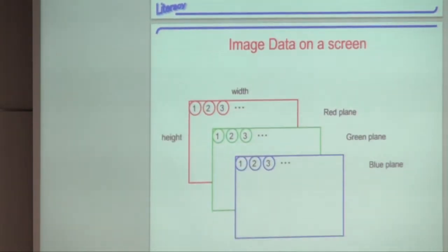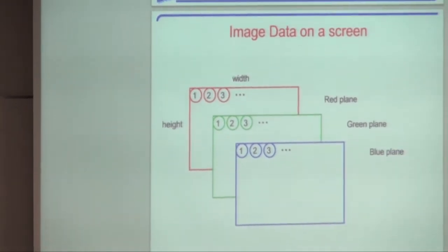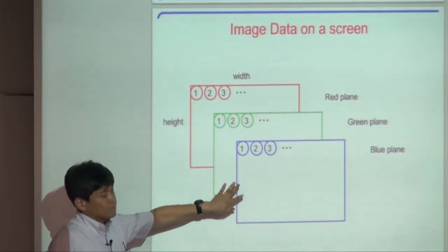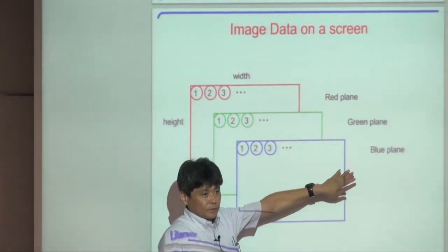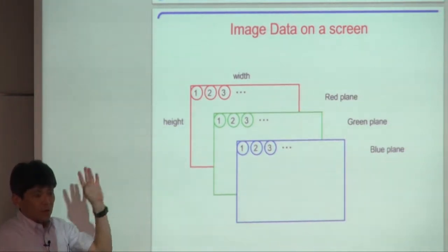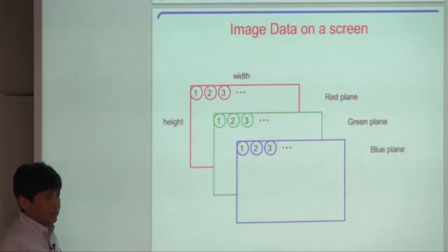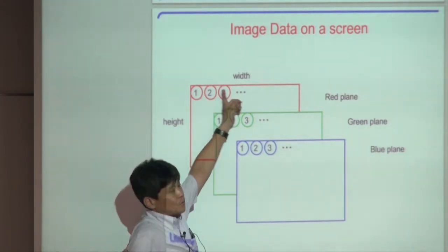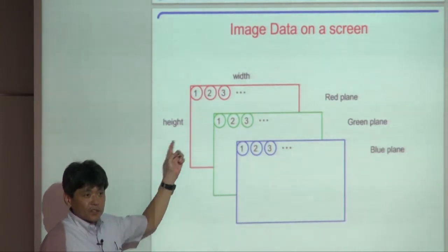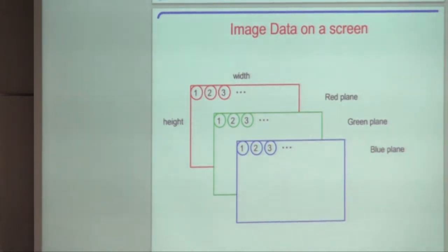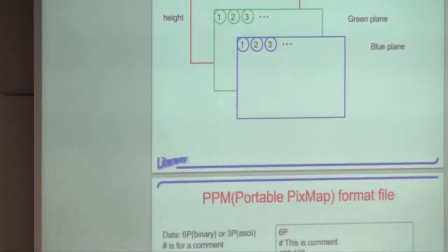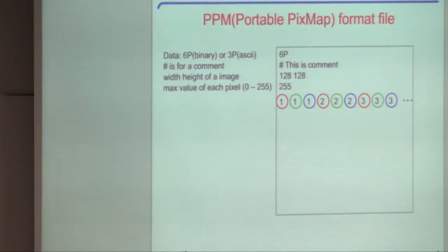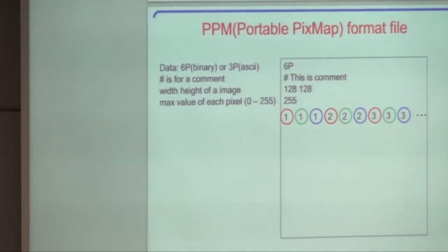As explained, each image consists of three planes: red plane, green plane, and blue plane — especially on your computer screen. The image also has a width and height, which are integer values. To represent the image data, the PPM format is used. PPM is one of the image file formats — very portable and easy to understand.